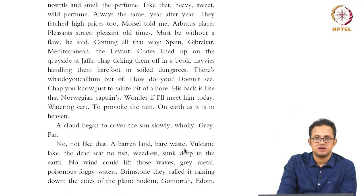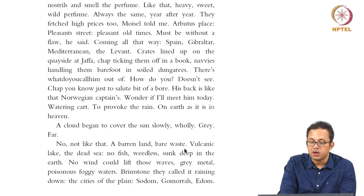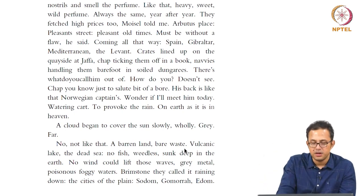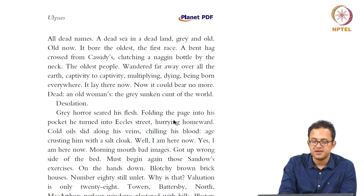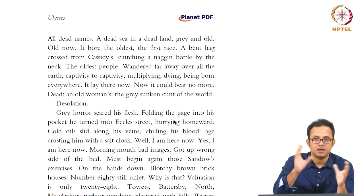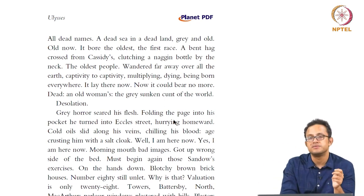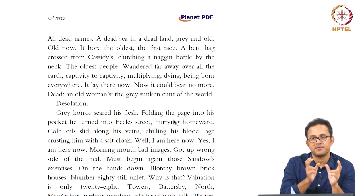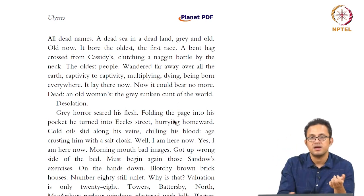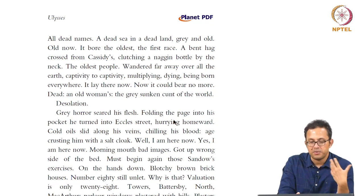Then we have a very cinematic description of the sky — Bloom looks up and sees a cloud beginning to cover the sun slowly, wholly, grey, far. Very cinematic visual narrative, almost a camera gaze. 'No, not like that. A barren land, bare waste, volcanic lake, the dead sea — no fish, weedless, sunk deep in the earth. No wind would lift those waves, grey metal, poisonous foggy waters. Brimstone they call it, raining down on the cities of the plain — Sodom, Gomorrah, Adam — all dead names. A dead sea in a dead land, grey and old.' The deadness comes as a mythic, almost prehistoric biblical concept — dead cities — and immediately cuts into the present time of dead meat, dead sausages, dead imagination, dead Dublin. The meat metaphor becomes a trigger to certain mythical landscapes which are all dead, and you cut back again into the present — dead Dublin — where consumption becomes a form of cannibalism.